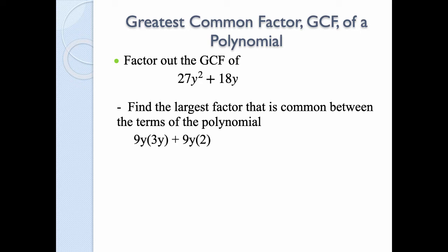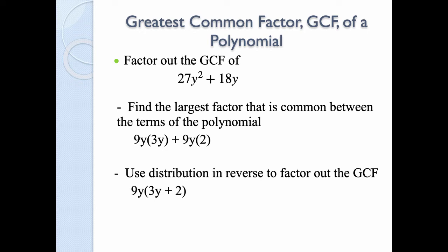So in this case we can pull a 9y out of both. We write it as 9y times 3y — and if you multiply those together you get back to 27y². The other term is 9y times 2, and if you multiply those you get back to 18y. We basically do distribution in reverse. Since 9y is common to both terms, we pull it out front and put what's remaining — the 3y and the 2 — in parentheses. We have now factored out the GCF, which is 9y, the greatest common factor between 27y² and 18y.